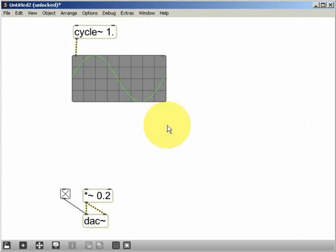In this tutorial we're going to look at scaling digital audio signals and using them as control signals. We have here a cycle object which is generating a sine wave at 1 Hertz.